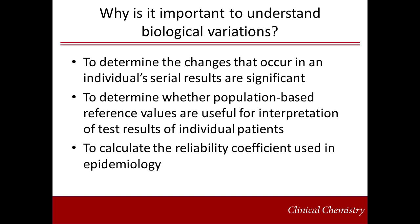Biological variation is an important concept for clinical chemists to understand because it helps answer many questions that clinical chemists encounter on a daily basis. For example, it can be used to determine whether the changes that occur in an individual's results are statistically significant or not. It can be used to determine whether population-based reference ranges are helpful for interpretation of individual patient test results. It can also be used to calculate the reliability coefficient used in epidemiology.